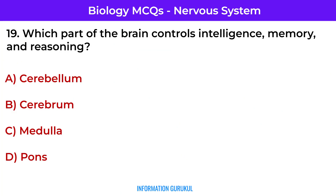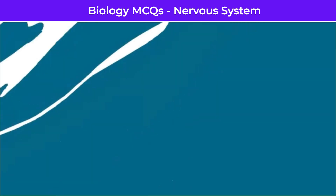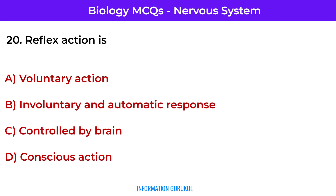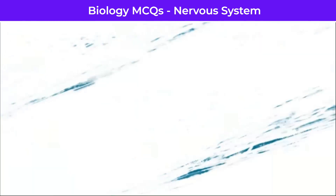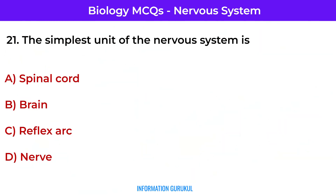Which part of the brain controls intelligence, memory, and reasoning? Cerebrum. Reflex action is an involuntary and automatic response. The simplest unit of the nervous system is the reflex arc.